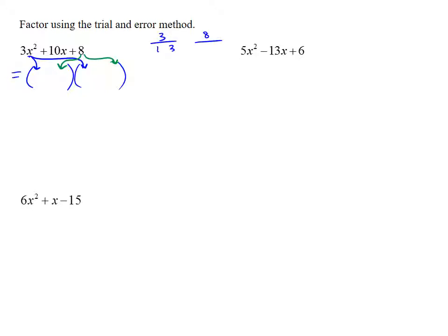Now, luckily, 3 only has one way that you can factor it, but 8 has several: 1 and 8, 2 and 4. So when we go to put our factorizations of 3 and 8 in, we are going to have multiple ways that we can do this.